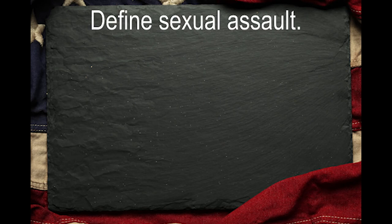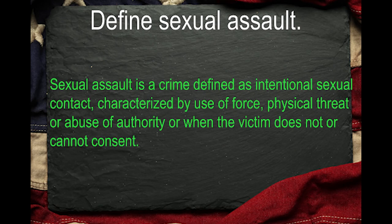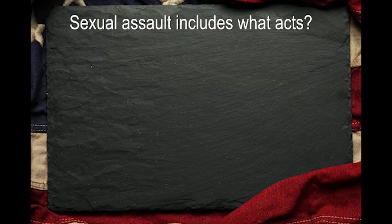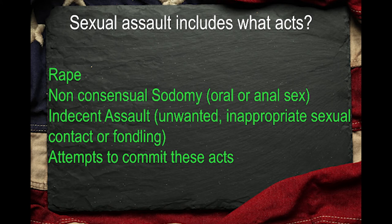Define sexual assault. Sexual assault is a crime defined as intentional sexual contact characterized by use of force, physical threat, or abuse of authority, or when the victim does not or cannot consent. Sexual assault includes what acts? Rape, non-consensual sodomy, indecent assault, and attempts to commit these acts.